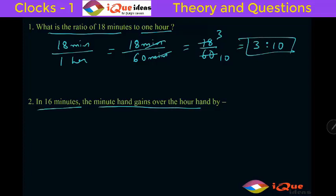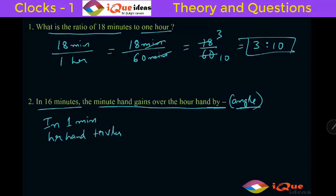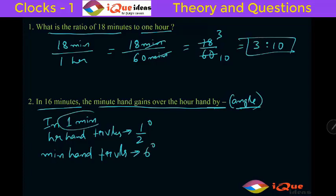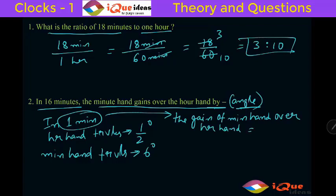Second question: in 16 minutes the minute hand gains over the hour hand — find the angle. In 1 minute the hour hand travels half a degree and the minute hand travels 6 degrees. So in every 1 minute the gain of the minute hand over the hour hand is equal to 6 minus half, that is 11 by 2 degrees.